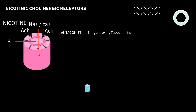This ion channel can be antagonized by alpha-bungarotoxin and tubocurarine. These substances do not allow acetylcholine to attach, so the channel does not activate and cations cannot enter, leading to inactivation. Tubocurarine is a skeletal muscle relaxant — it blocks acetylcholine from fitting into the muscle end plate, preventing depolarization and causing muscle relaxation.